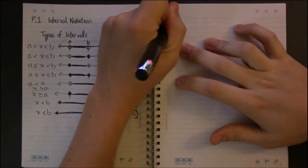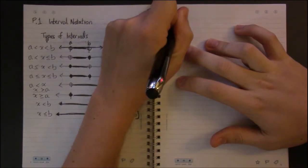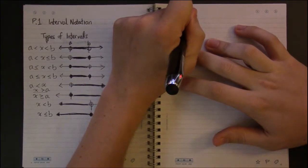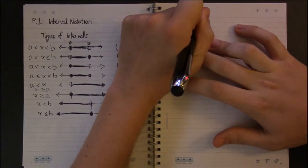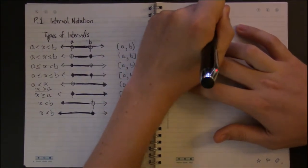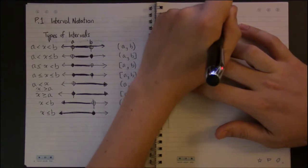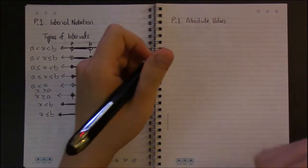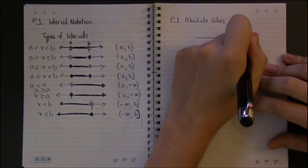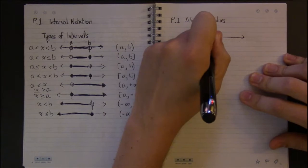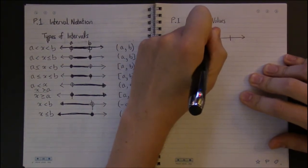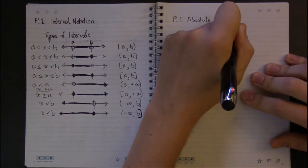The last topic in section P1 that I want to cover deals with absolute values. Absolute values deal with distance. So if we're on the number line, let's try to figure out what's the distance between, say, negative 3 and 7.